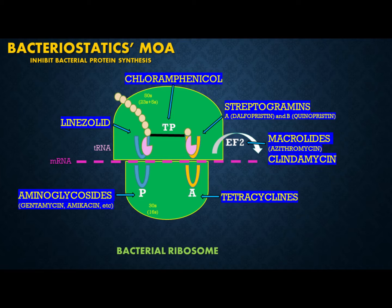Let's remind ourselves of some basics from Step 1. Proteins are made of long chains of amino acids, and the instructions for making proteins are found in the bacterial DNA in the bacterial chromosome. The DNA instructions are transcribed into RNA. DNA and RNA are called nucleic acids and are made of nucleotides, which consist of sugar, phosphate groups, and a nitrogen base. Once the DNA instructions are transcribed into mRNA, this piece of RNA moves to the cell organelles called ribosomes to produce protein, a process called translation.